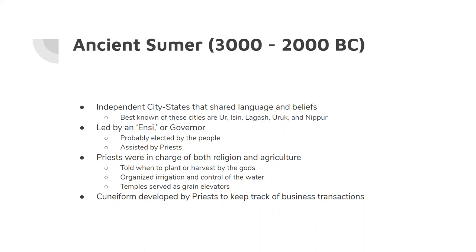There's some evidence that the governors may have been elected by the people, but there are no guarantees of that. They were helped by the Sumerian priests, who in addition to helping the governor were in charge of religion — as you could guess — but they were also in charge of farming. At the time in Ancient Sumer, farming and religion and nature were all very closely related. The priests told everybody when to plant, when to harvest, where to direct the water. The temples were used as grain elevators — basically storage places for all the food.